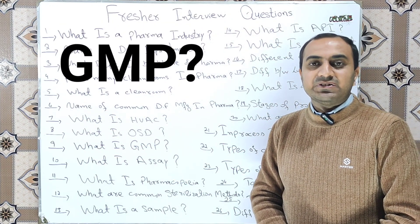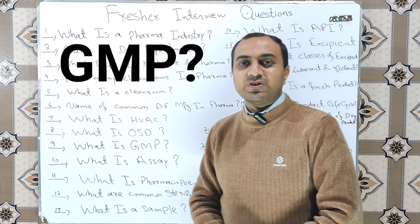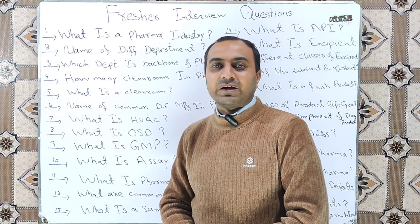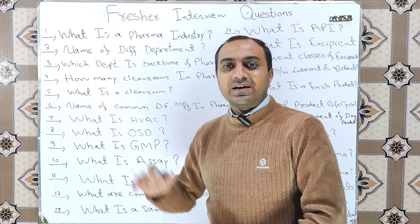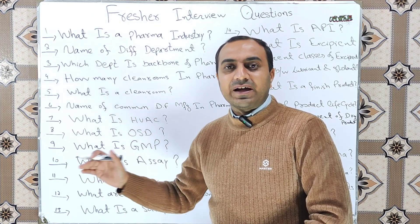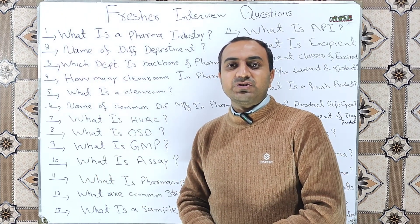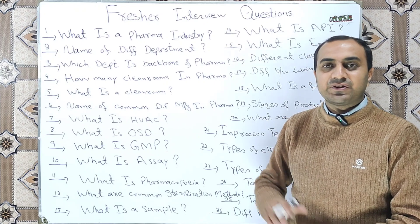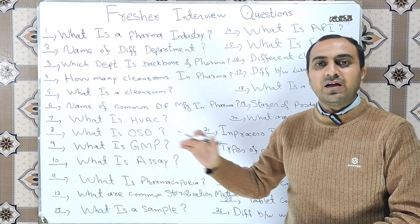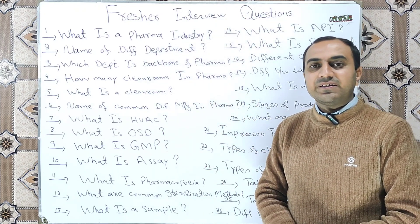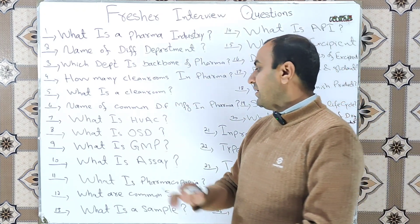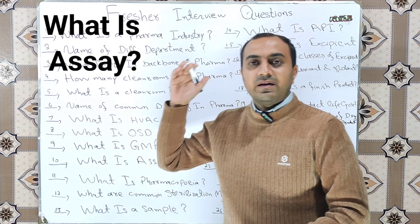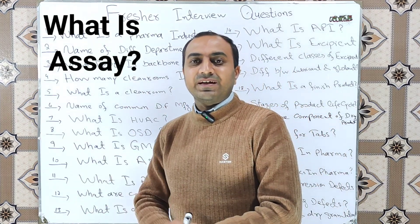What is GMP? GMP is an abbreviation for Good Manufacturing Practices. These are regulatory guidelines which ensure that all products are manufactured according to the required standards.